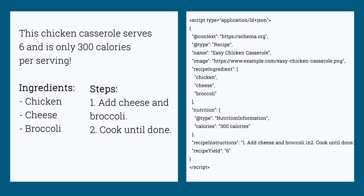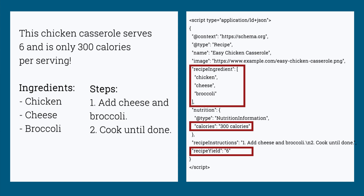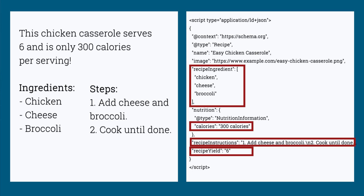By using structured data, you can make sure that Google knows that the serving size is six, the number of calories is 300, it'll know the ingredients that are needed, and each step in making the recipe. You accomplish this by giving information to Google through a standardized vocabulary and format. The vocabulary is defined by an organization called Schema.org.